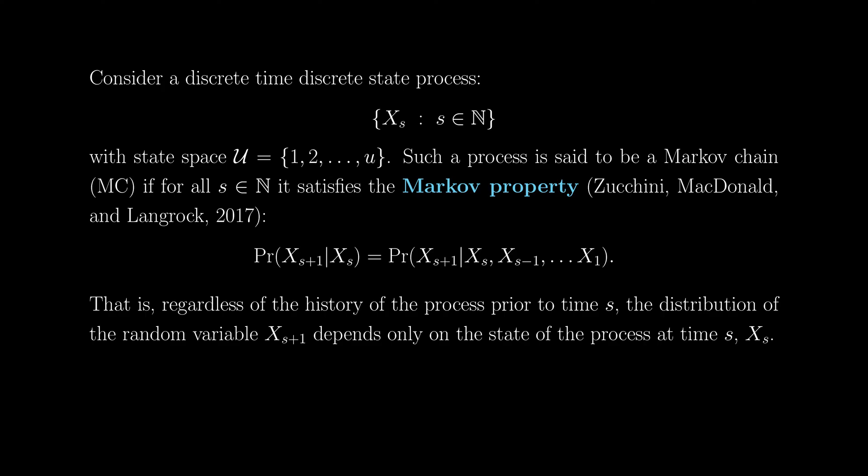Cool, so that gives us chains, but what about Markov chains? Well, if we consider a discrete time, discrete state process, x sub s, such that s is an element of the natural numbers, such a process is said to be a Markov chain, if for all elements s in the naturals, it satisfies the so-called Markov property. And that is that the distribution of the state of the process at time s plus one, given the state of the process at time s, is the same as the distribution of the state of the process at time s plus one, conditional upon its entire history, up to and including time s.